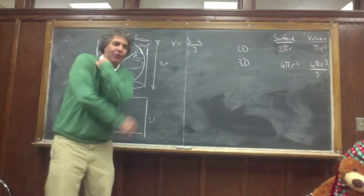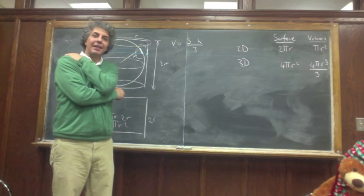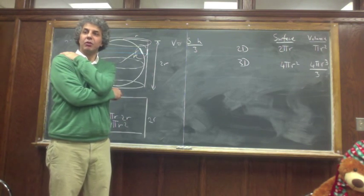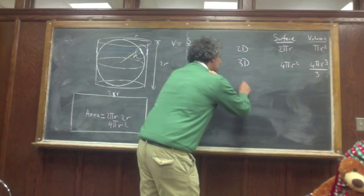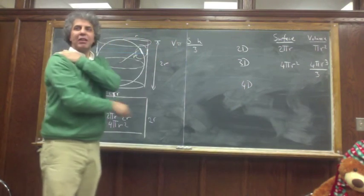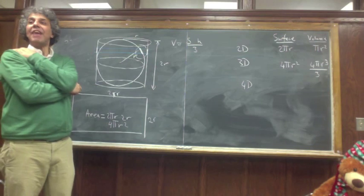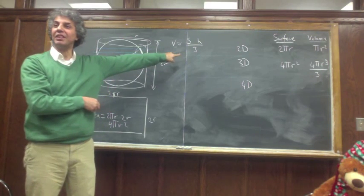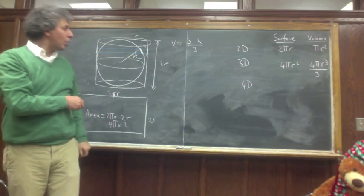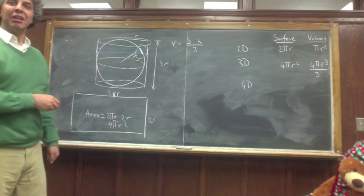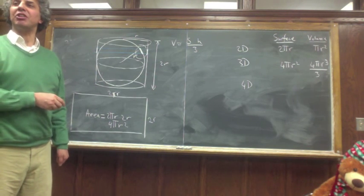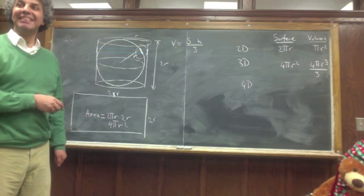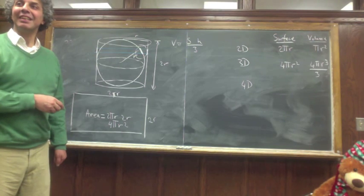What is beautiful is I can extend these ideas to higher dimensions — 4, 5, 6 dimensions. The relationship between volume and surface is correct in every dimension. The only difference is in 3D this denominator is 3, in 4D it is 4, in 5D it is 5. Turns out you could also take an n-dimensional sphere — let's say a 4-dimensional sphere — and place it inside a cylinder.